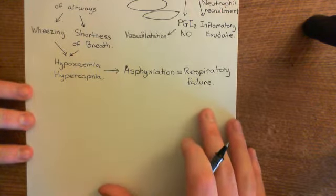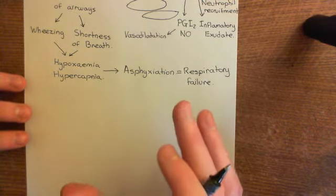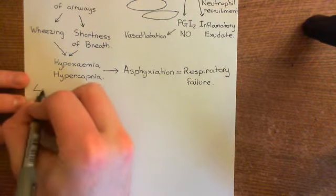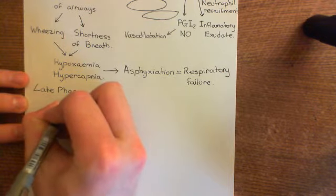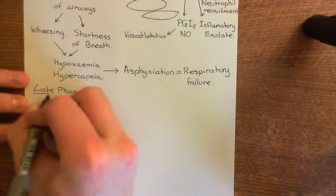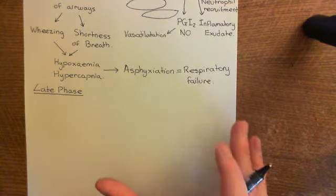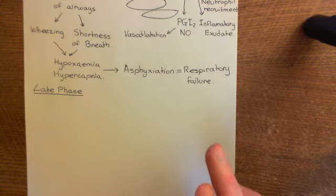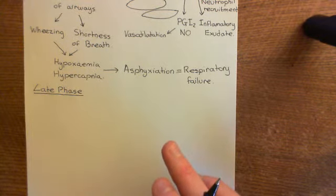Now let's talk about the late phase. The immediate phase occurs within minutes of secondary allergen exposure. The late phase is driven by tumor necrosis factor alpha (TNF-alpha) — the fourth pro-inflammatory mediator released by mast cells, the one that took the longest to be produced.